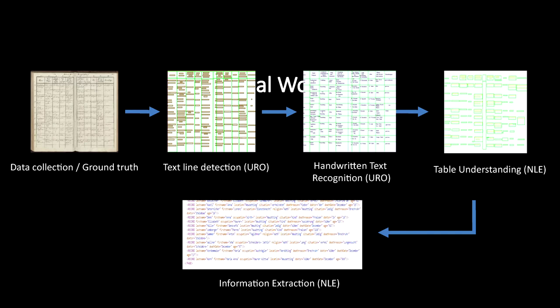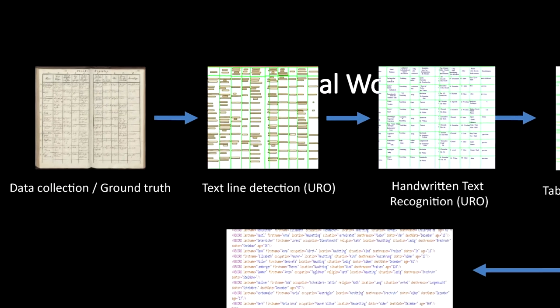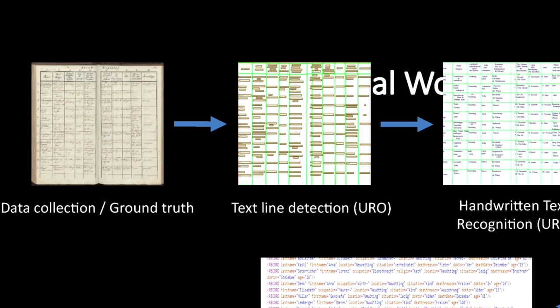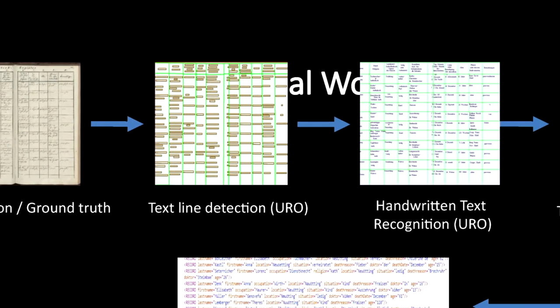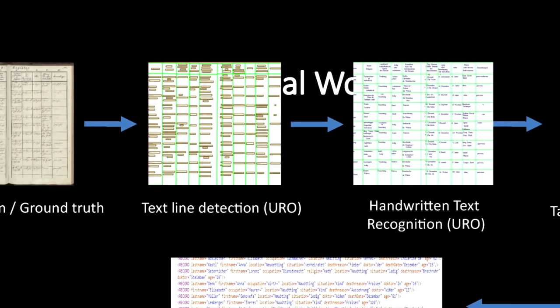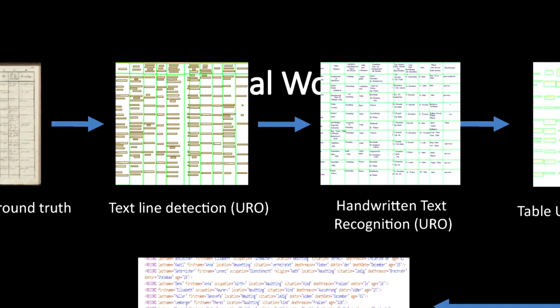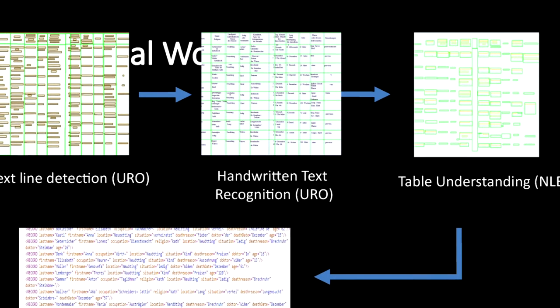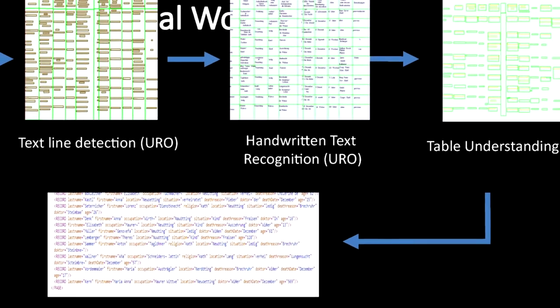We trained our model in order to perform table understanding. The first workflow steps are very basic: we first detect the text lines using the tool in the Transkribus platform, then we apply our HTR model. Then we perform the table understanding in order to structure the tables into records. And then there is a step mentioned as information extraction, which is in fact a sequence of small steps in order to carefully extract the information we need to perform temporal visualization.